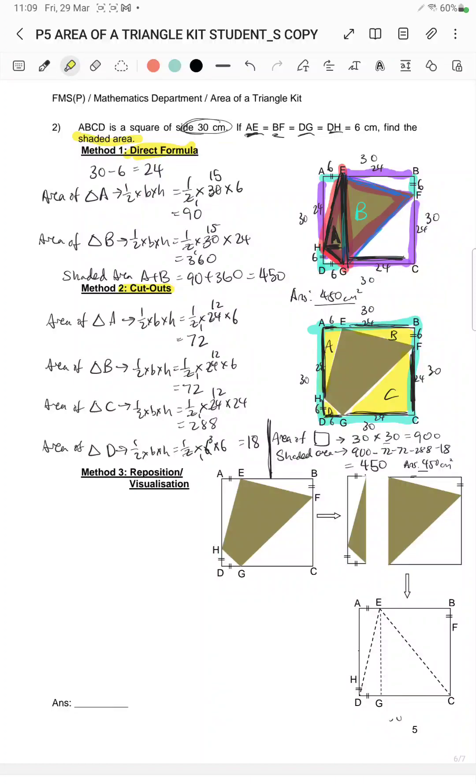Hey students, we have reached the third method which is reposition and visualization. Now for this particular method, it takes a bit of movement. You have to cut out the parts and usually after you cut out the parts, you will form a shape that's easier for you to find, either a rectangle, square, and of course in this case it's just one big triangle.